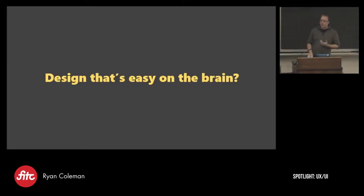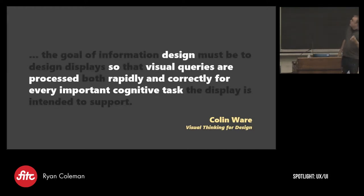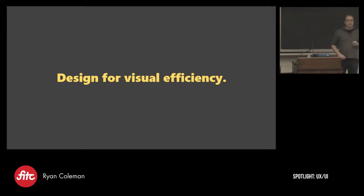So when I talk about design that's easy on the brain, there's a quote I like to use from a researcher named Colin Ware. He talks about the goal of information design must be to design displays so that visual queries are processed both rapidly and correctly for every important cognitive task. Or as I like to say, design for visual efficiency. This is about designing so that our brains have to put the least amount of effort into understanding what they're seeing. If you do the right kind of design, brains are going to get the gist of it right away and will be more efficiently routed to the things they need to understand.